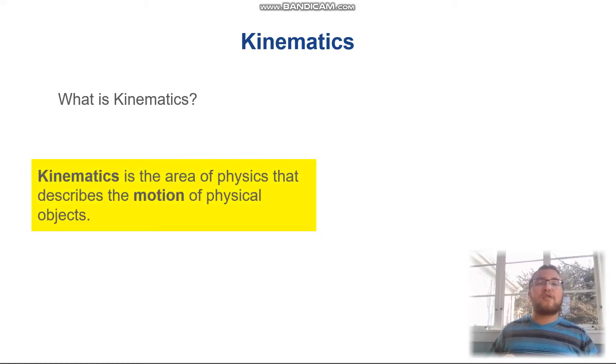We're going to start off talking about kinematics. Now one question we might have is, what is kinematics exactly? Well, kinematics is the area of physics that describes motion. So if we want to talk about a car rolling down a road, or a ball being thrown off of a cliff, or any motion whatsoever, if we want to describe it, we use kinematics.